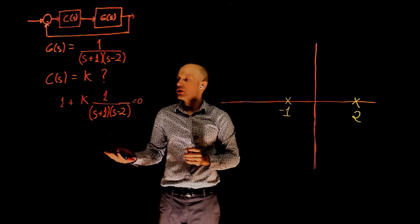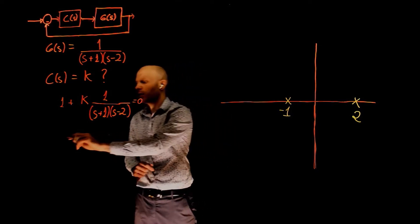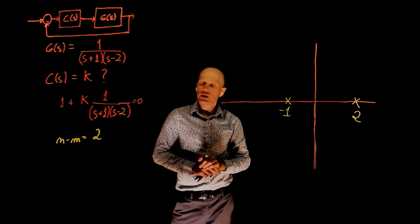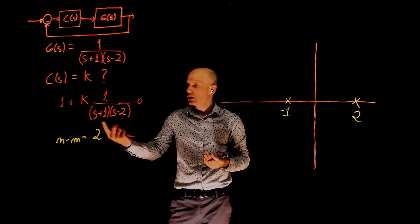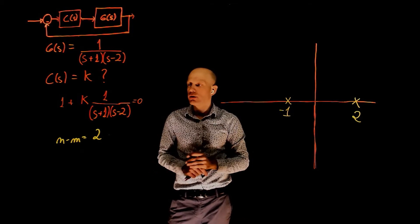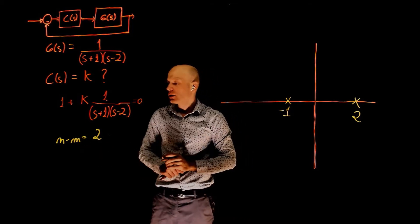We have two more poles than zeros, which means that N minus M equals to 2. And this will give us two asymptotes that will be used to take this pole to infinity.